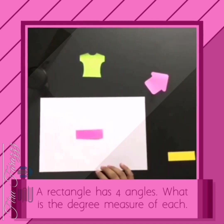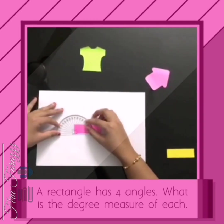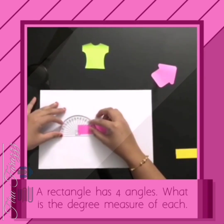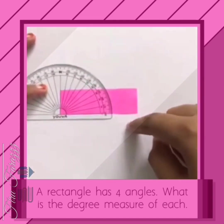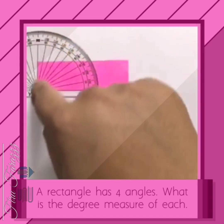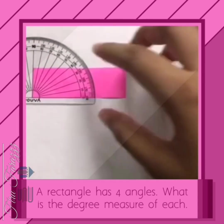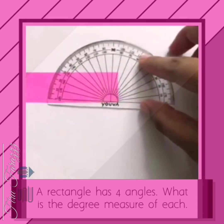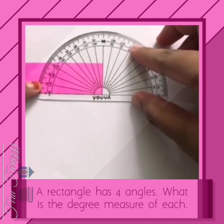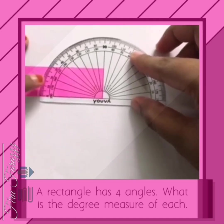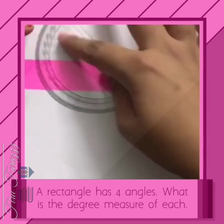For that we need a protractor. Place the protractor at each corner of the rectangle. Here the angle is 90 degrees — an L-shaped angle. Let's check the remaining angles. Here also the angle is 90 degrees and L-shaped.